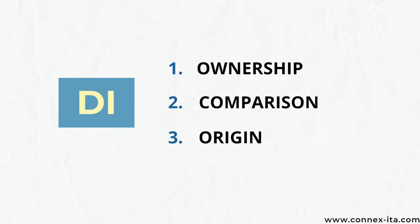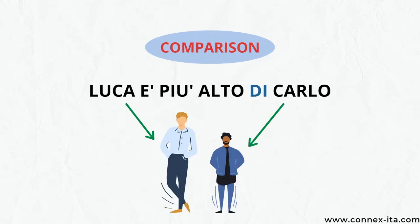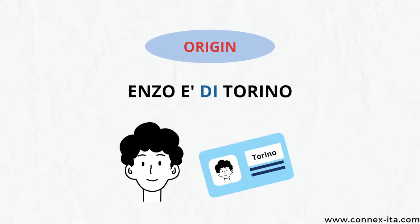We'll start with the preposition 'di', that can be used in the following situations: to specify who's the owner of something, for comparisons, or to say from where someone's from. For instance, 'Questo libro è di Marco' — this is Marco's book. Here 'di' is used to show possession. 'Luca è più alto di Carlo' means Luca is taller than Carlo, so 'di' is introducing a comparison. And 'Enzo è di Torino' — Enzo is from Turin — gives you information on where a person's from.